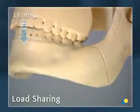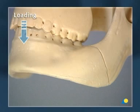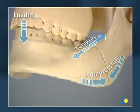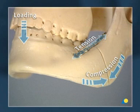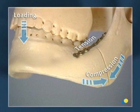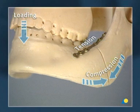Loading across a mandible angle fracture leads to tensional forces at the oblique ridge and compressive forces at the lower border. These tensional forces can be borne by a 2.0 locking plate positioned at the oblique ridge of the mandible. The compressive forces can be borne by the fracture surfaces, particularly at the lower border, provided there is an intact bony buttress.